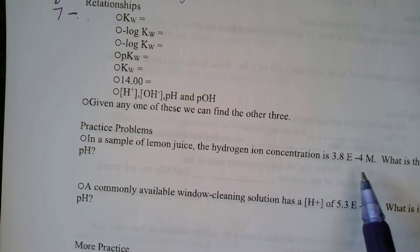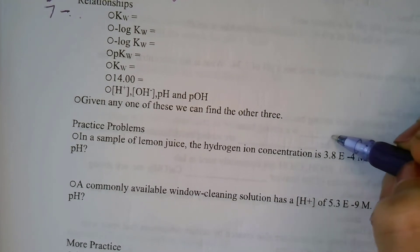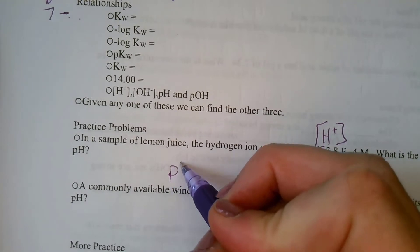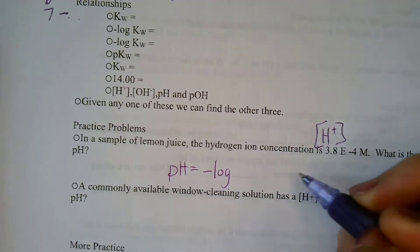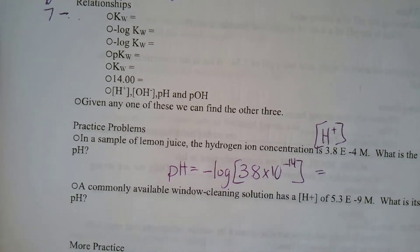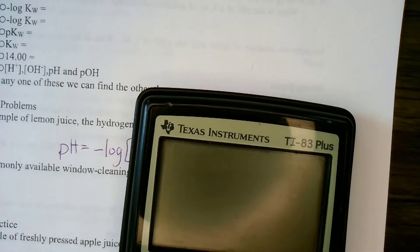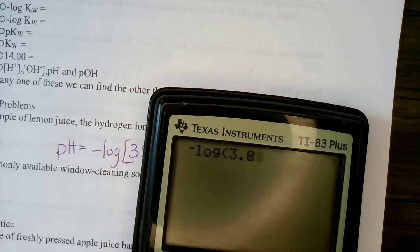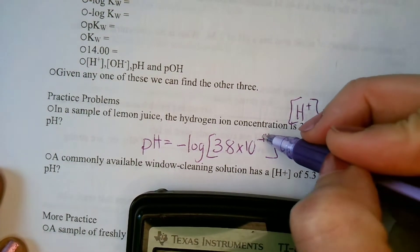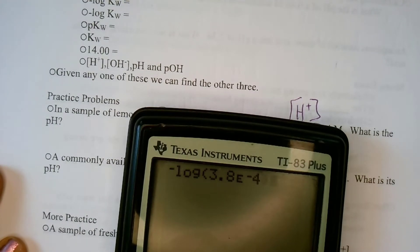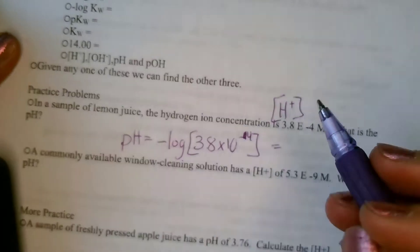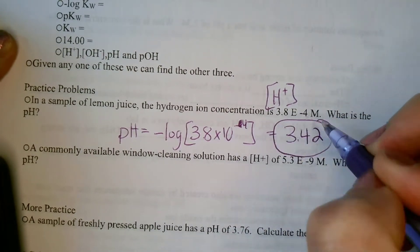Let's do our first practice problem. We have a sample of lemon juice with a hydrogen ion concentration of 3.8×10⁻⁴ M. We use pH = −log[H+], so we take the negative log of 3.8×10⁻⁴. Remembering the rule of going to two decimal places, we get a pH of 3.42 for this lemon juice.